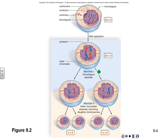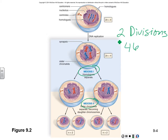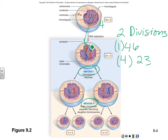Here you can see meiosis 1 and meiosis 2 — two divisions. We're going to go from one cell that has 46 to four cells that have 23 each. You can see four chromosomes here; then the chromosomes have duplicated themselves, so now we have 8. Then they split, so we have 4 and 4, and then 2, 2, 2, and 2.